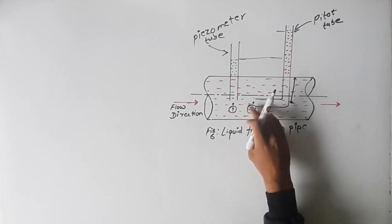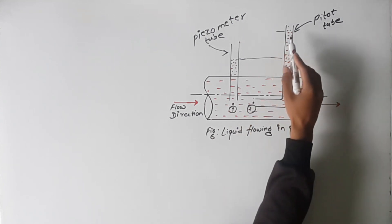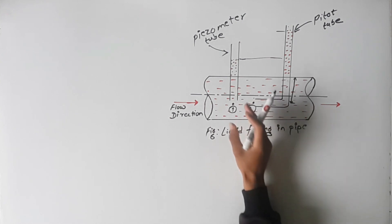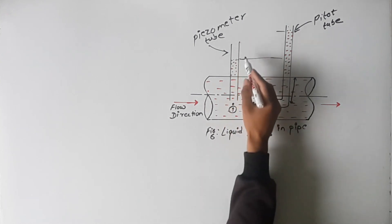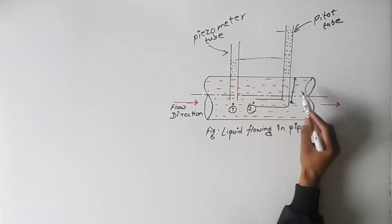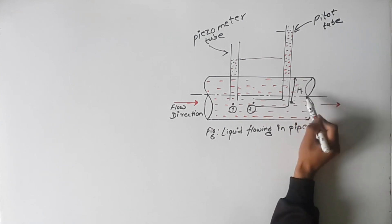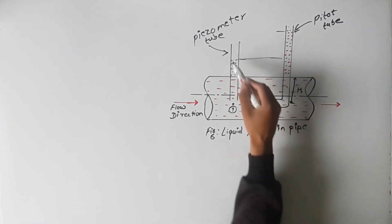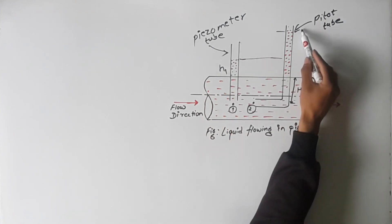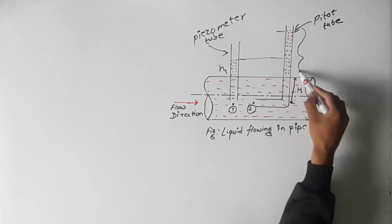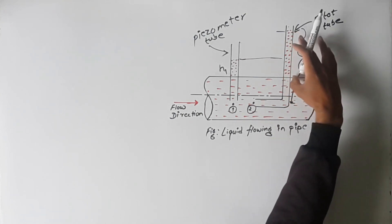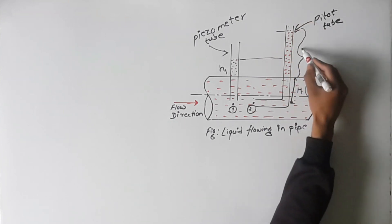A pitot tube is simply a tube bent at right angle, used to measure the velocity of flow at a point. When we insert the pitot tube, the liquid rises. Let the portion immersed in the liquid be capital H, the reading shown by the piezometer is h1, and the total depth of liquid in the piezometer tube of the pipe is h2.